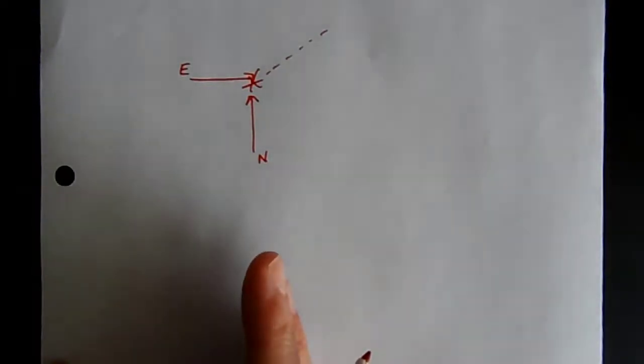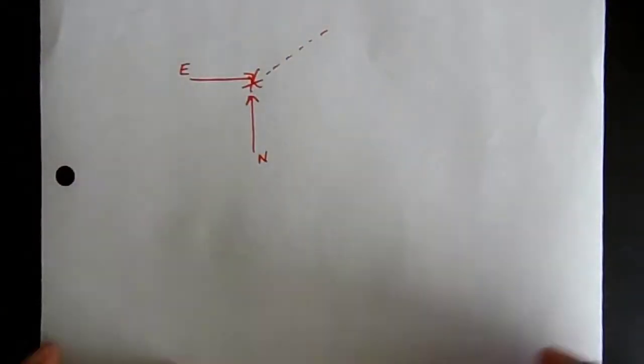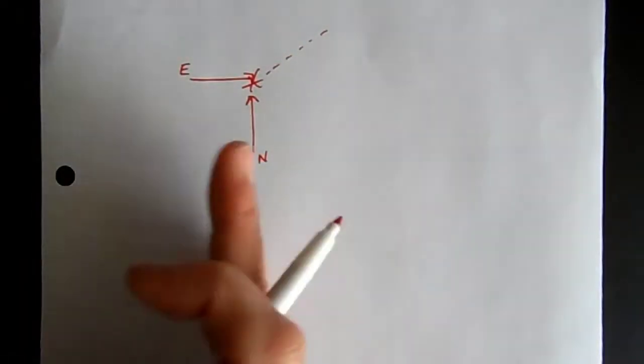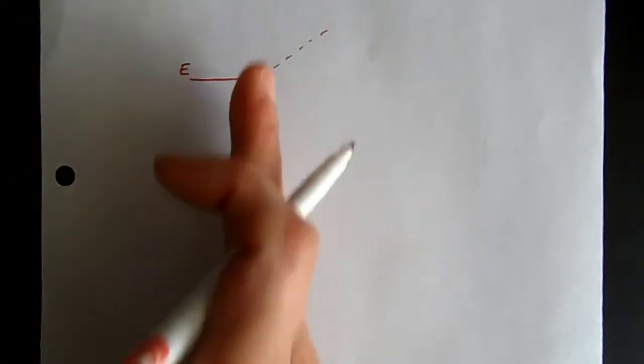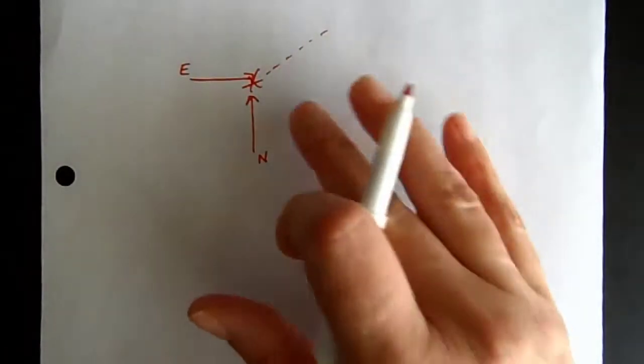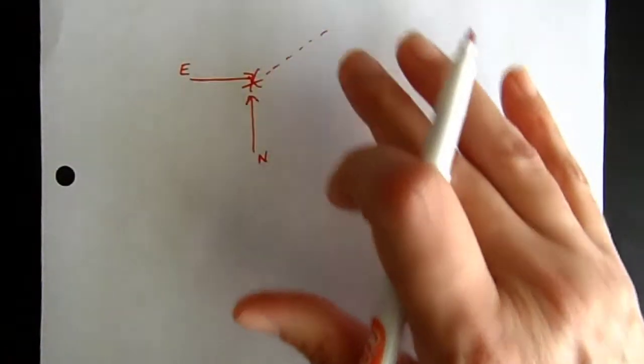We have some momentum going this way and some momentum going this way. So if they crash and stick together, they're not all going to go north, and they're not all going to go east — they're going to go off to the northeast in some direction. Just like we resolved other vectors like velocity and force into components, we can do the same thing with momentum.